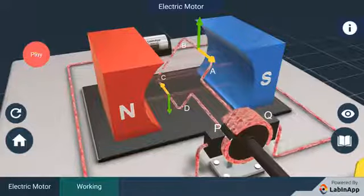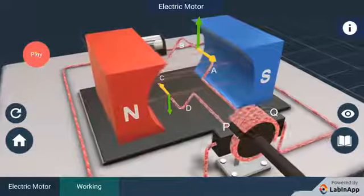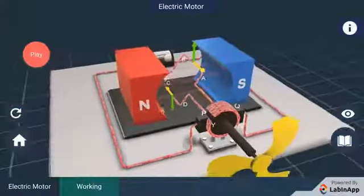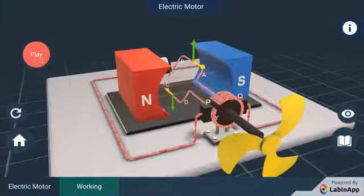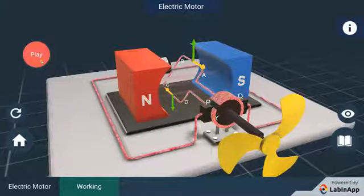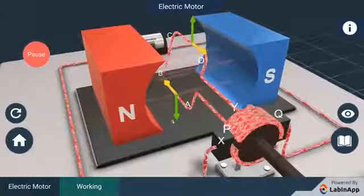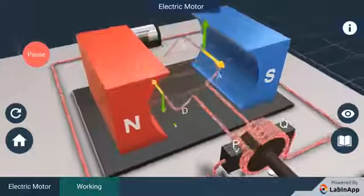Therefore, the coil and the axle rotate half a turn more in the same direction. The reversing of the current is repeated at each half rotation giving rise to a continuous rotation of the coil and the axle.